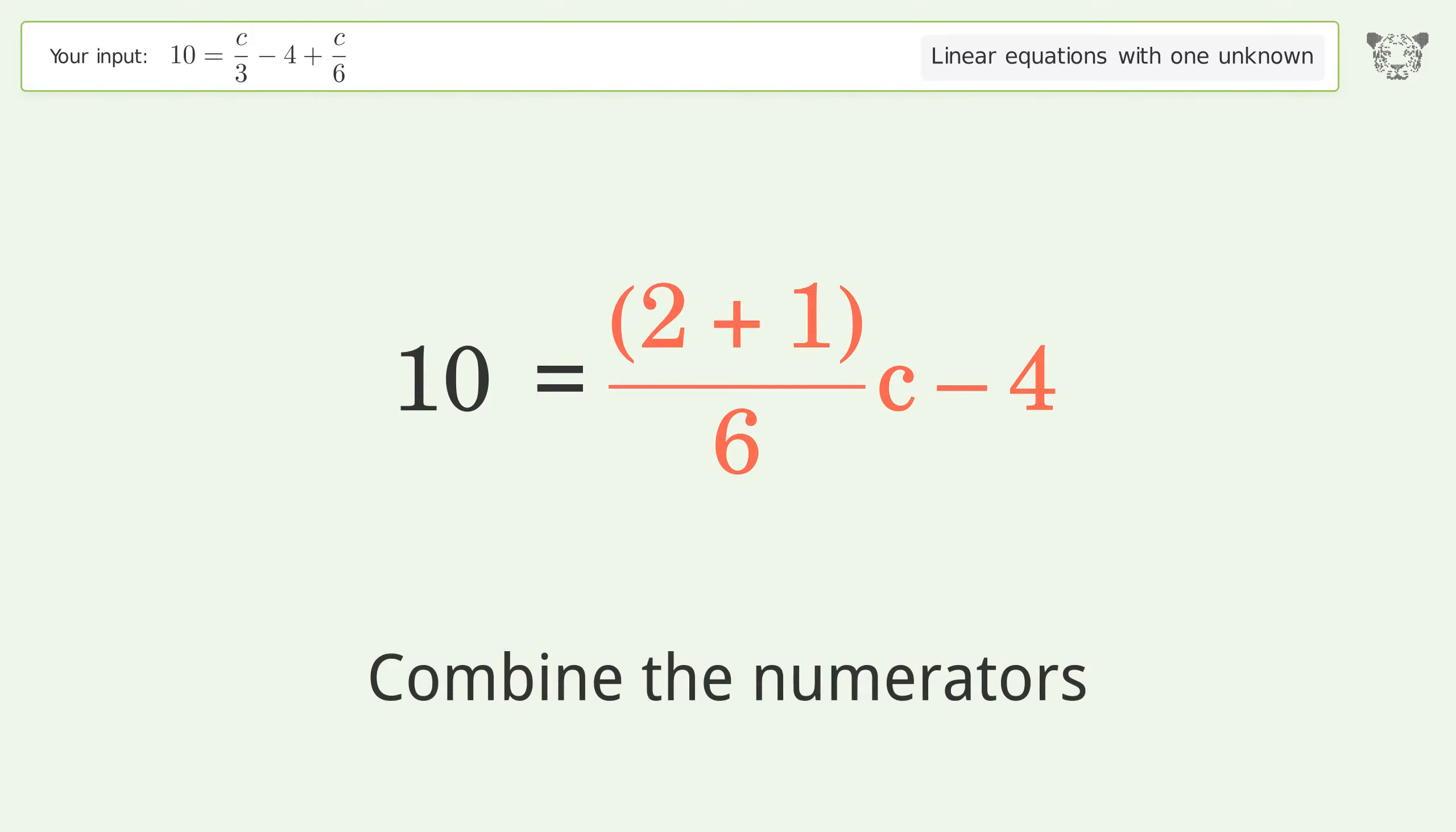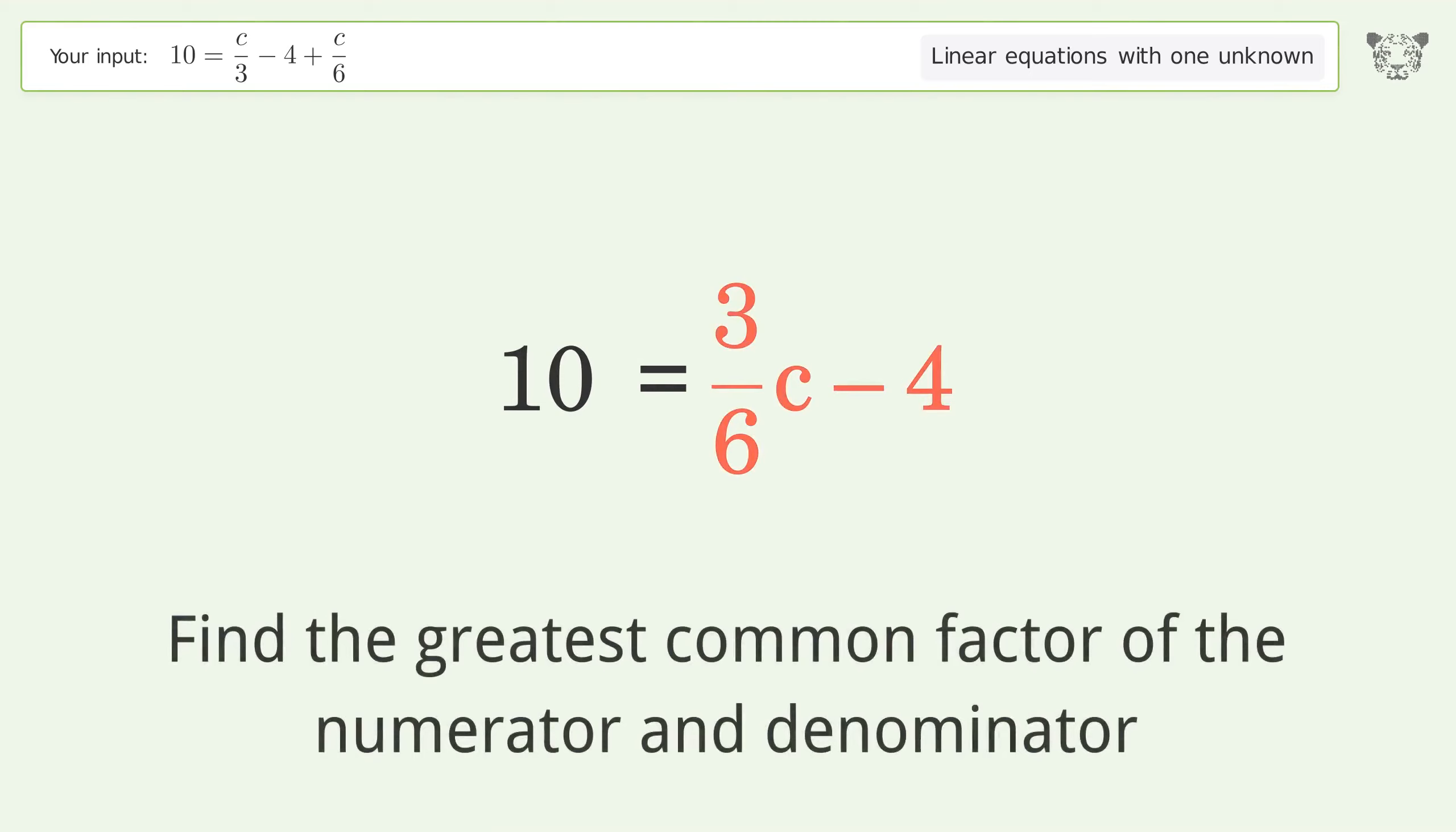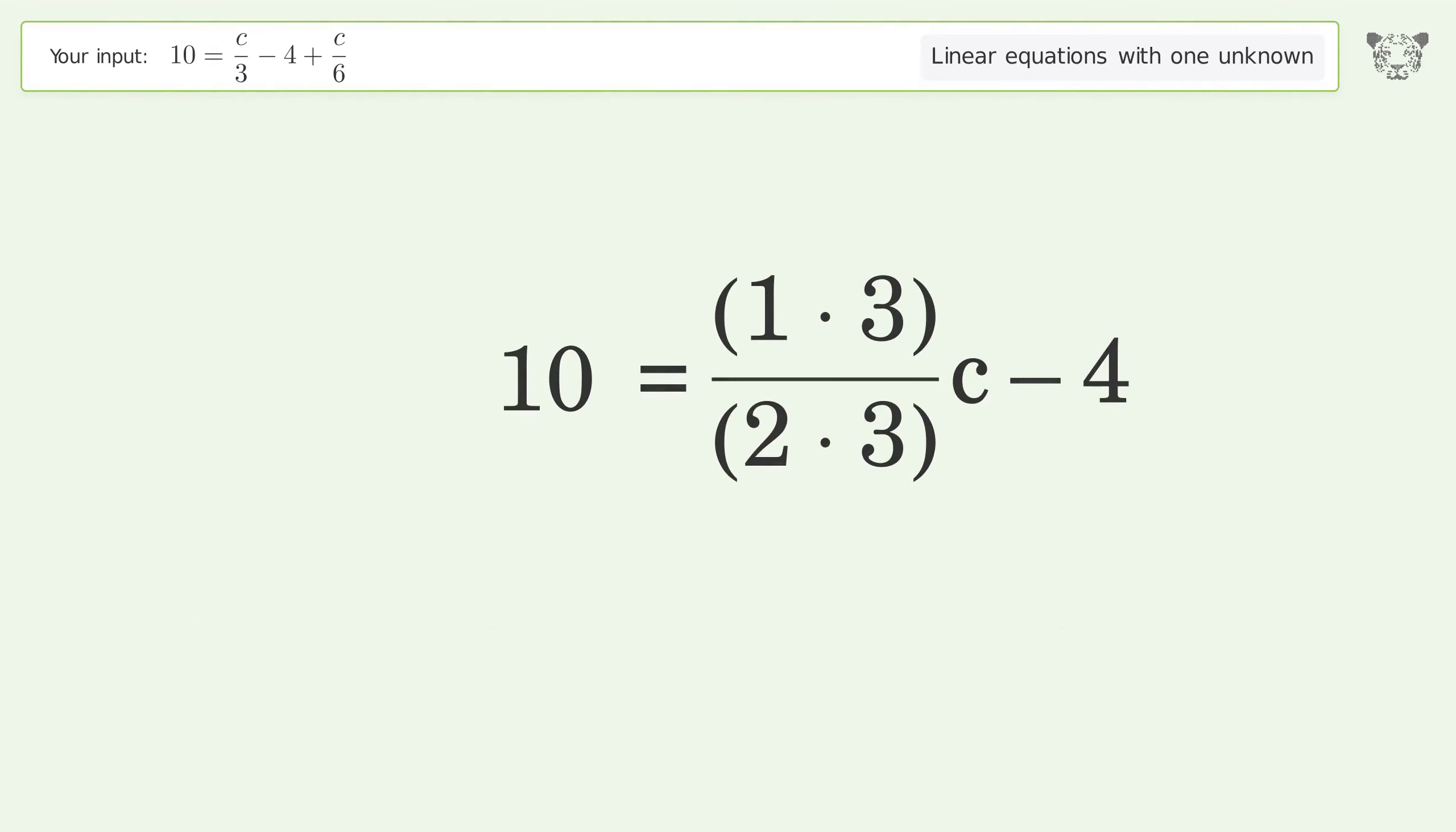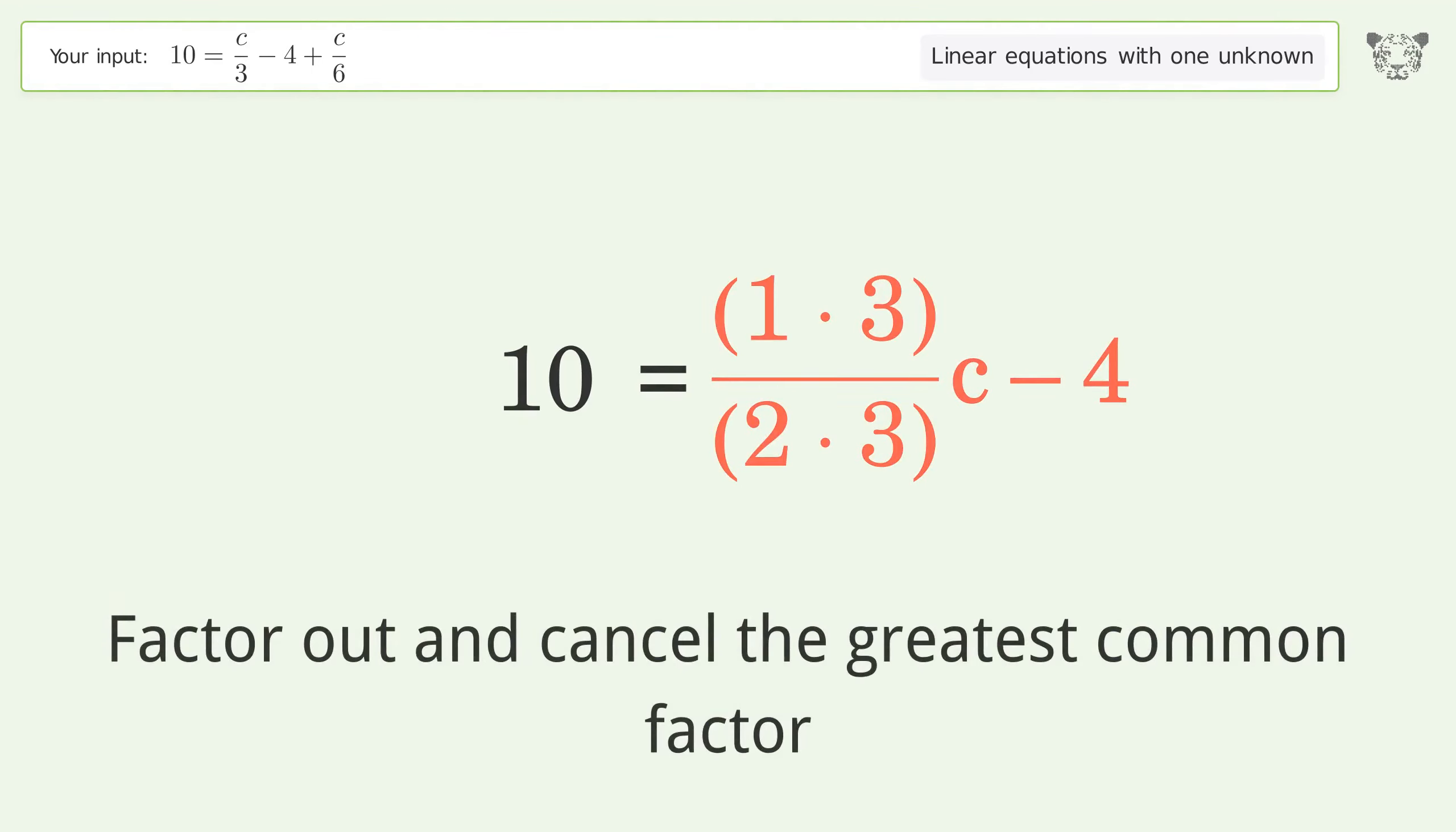Combine the numerators. Find the greatest common factor of the numerator and denominator. Factor out and cancel the greatest common factor.